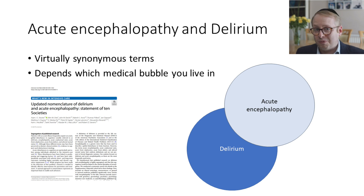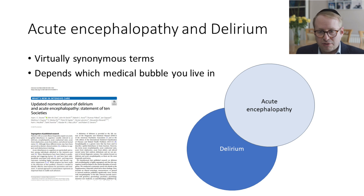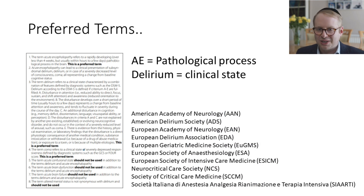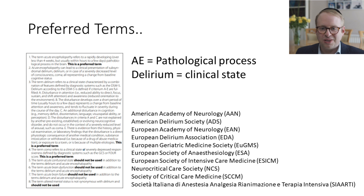It very much depends on which medical bubble you live in. Geriatricians, psychiatrists, and psychologists tend to use the term delirium, while those in intensive care and neurosciences tend to refer to it as acute encephalopathy. There's a wonderful paper which looks at how these terms are polarised depending on specialty. Importantly, they came together with some preferred terms: acute encephalopathy refers to the underlying pathological process, while delirium is the clinical expression of it.